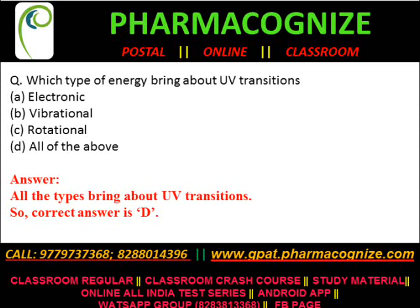Fifth question: which type of energy brings about UV transition? Option A) electronic, B) vibrational, C) rotational, D) all of the above. All these types bring about UV transition, so the correct answer is D, all of the above.